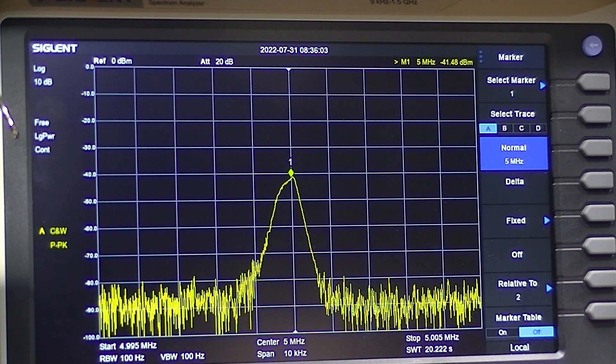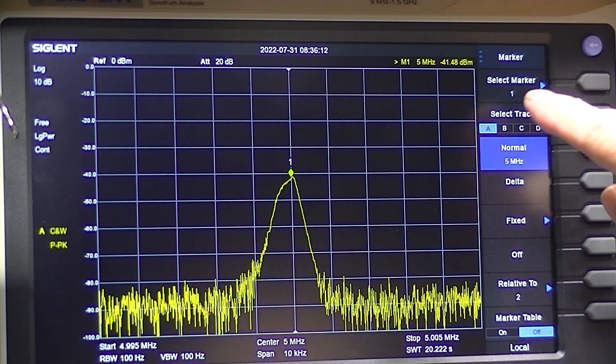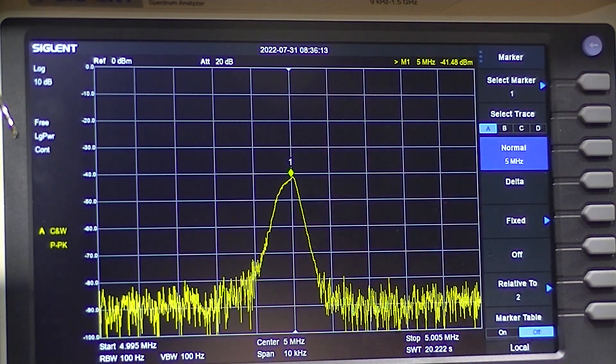Here is the 5 MHz receiver, minus 80 dB input. And we have a minus 41 dB output. The marker is again at 5 MHz.